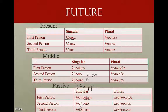If we just take a look at these two, the basic rule is going to be: stem, theme vowel, iota, and ending. Not too hard yet.